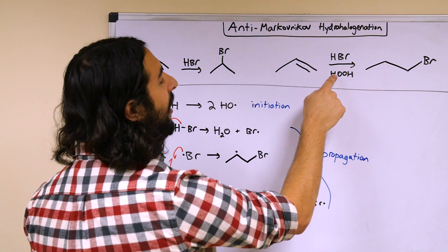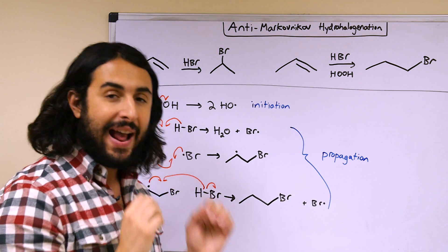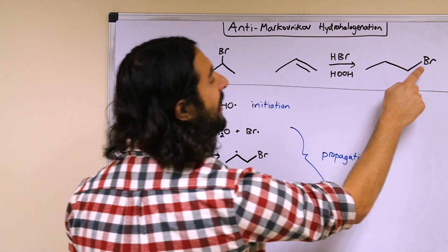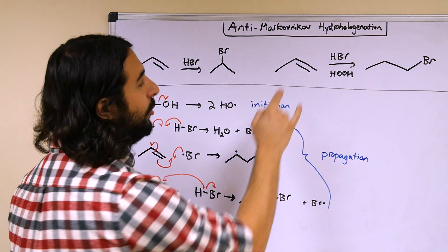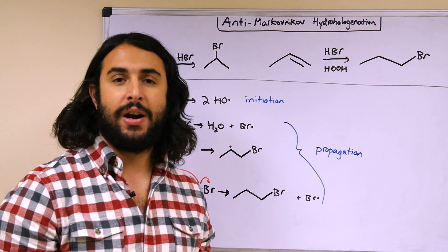But then we didn't look at the mechanism, but we also noted that in the presence of peroxides this would shift to anti-Markovnikov regiospecificity. In other words, we would get the halogen on the less substituted of the two carbons participating in the pi bond. And we didn't look at why, well here's why.